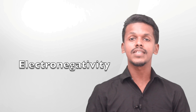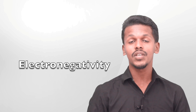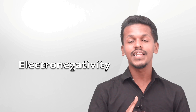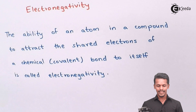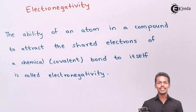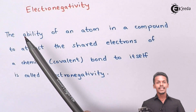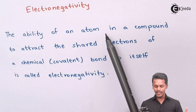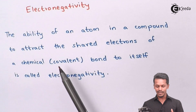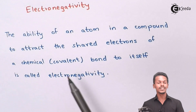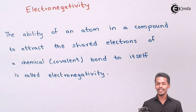Hello friends. Now we are going to discuss about the property that we observe in the periodic table, and that is electronegativity. What is electronegativity? It is the ability of an atom in a compound to attract the shared electrons of a chemical — mostly covalent — bond towards itself. That kind of property is known as electronegativity.